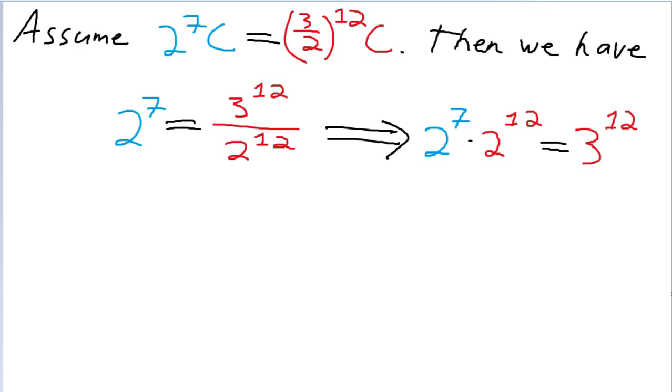Now, can that be the case? In other words, can it be the case that some even number, because 2 to the 19th power is definitely going to be some even number, is going to be equal to some odd number, since 3 to any power will always be an odd number. However, that, of course, cannot be the case.